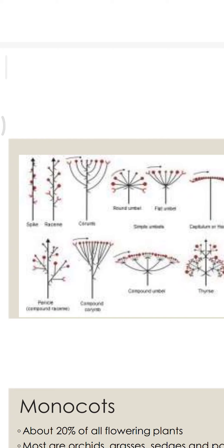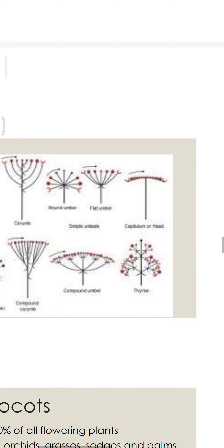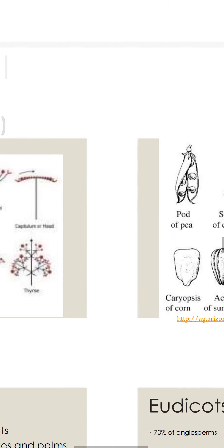Now see the inflorescence. Inflorescence is of three types: racimos, cymos, and spatial. Here you can see the types of racimos and types of cymos flowers, along with their diagrammatic representations.